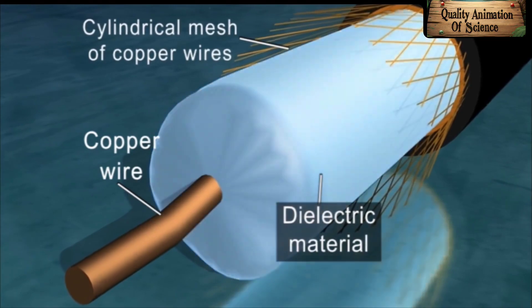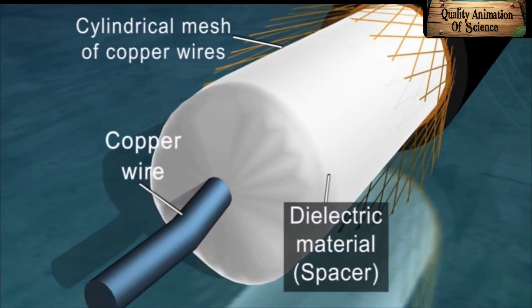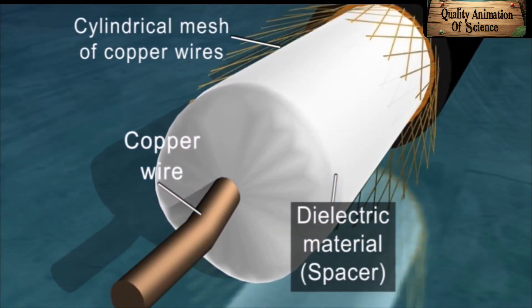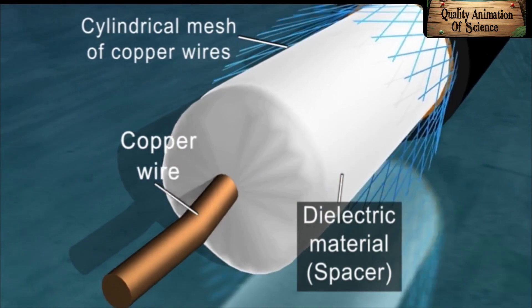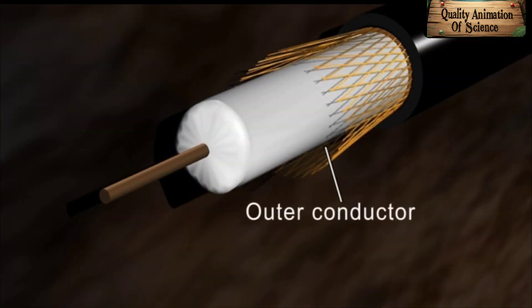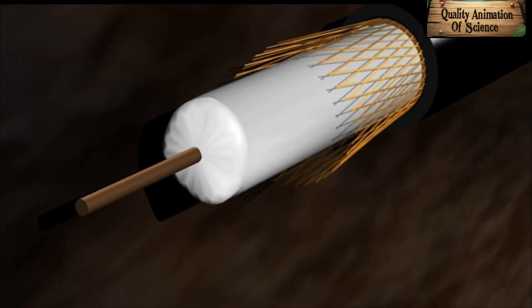The dielectric material functions as a spacer between the central copper wire and the outer copper wire mesh. The outer conductor is normally grounded and acts as an electric shield for the radiation produced by the inner copper wire.